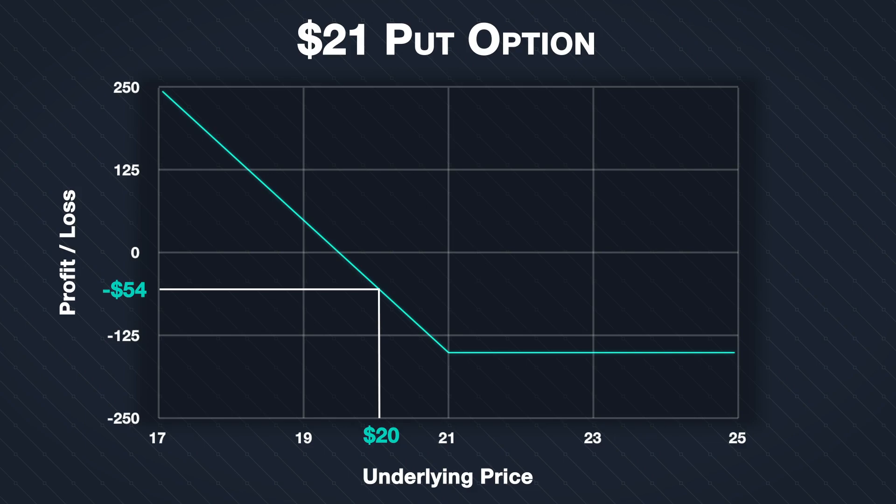It is useful when buying put options, particularly if you're planning to hold them to expiry, to know what price the underlying needs to reach for your trade to break even. Thankfully, this is a very simple calculation. In that example where the strike price of the put option was $21 and the premium paid was $1.54, the break-even point is simply $21 minus $1.54, which equals $19.46.